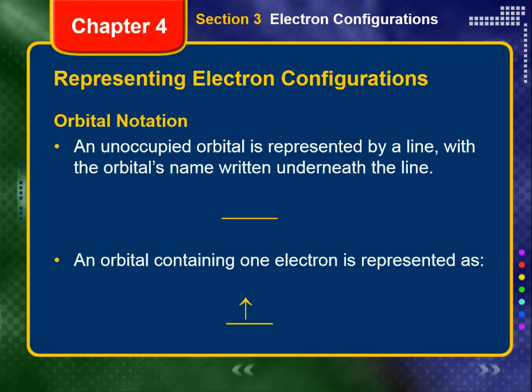Representing Electron Configurations. Three methods or notations are used to indicate electron configurations. Two of these notations will be discussed in the next two sections for the first period elements, hydrogen and helium. The third notation applies mostly to elements of the third period and higher, and will be discussed in this section on third period elements.